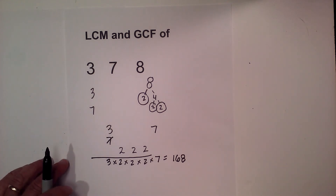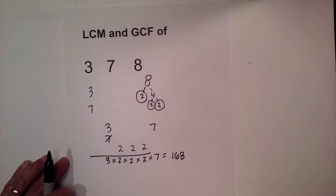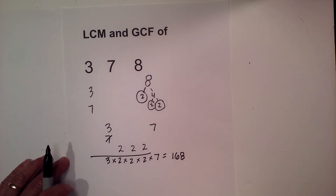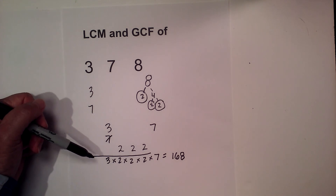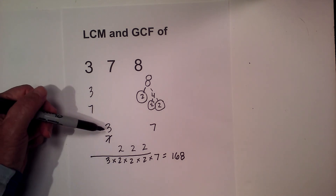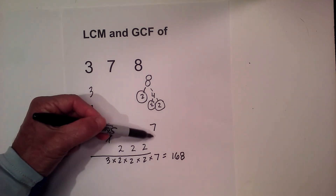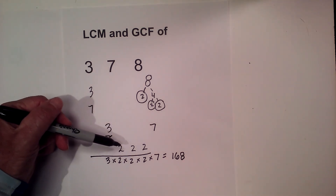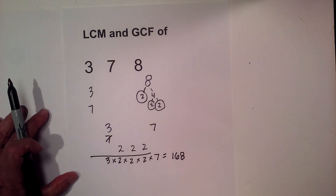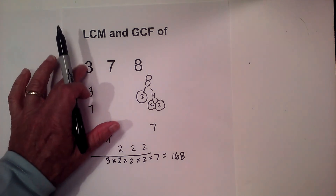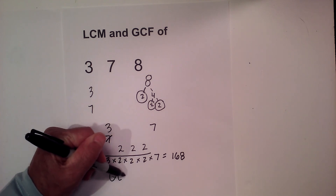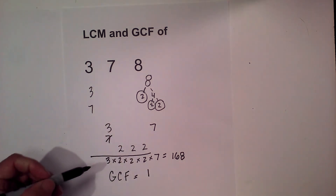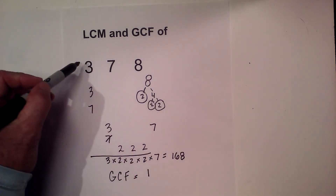For the greatest common factor, you need at least three of the same numbers in order to multiply them together. You don't have three threes, three sevens, or three twos. Since there are no triplets across all three numbers, the GCF is one.